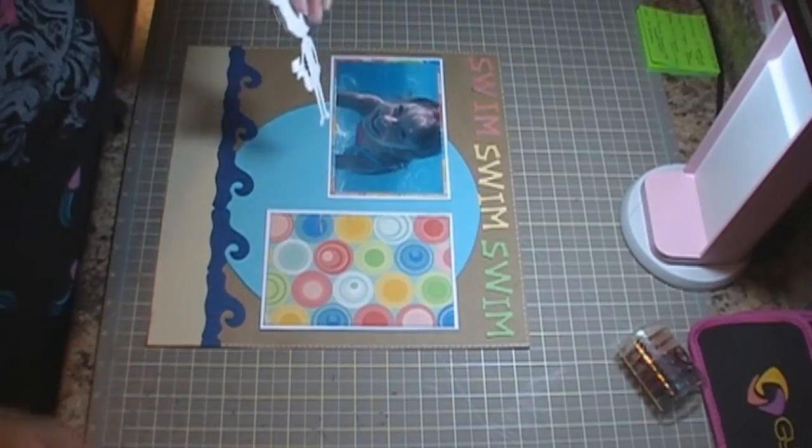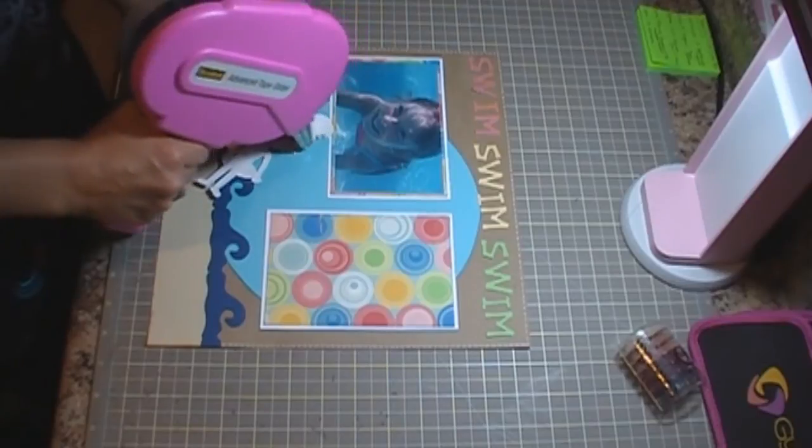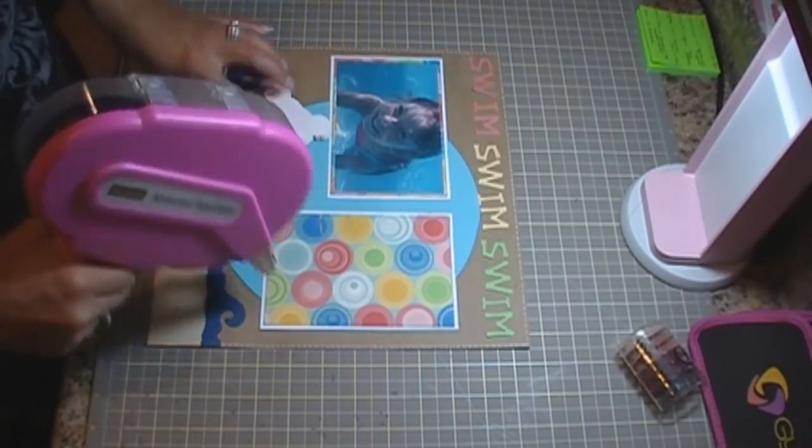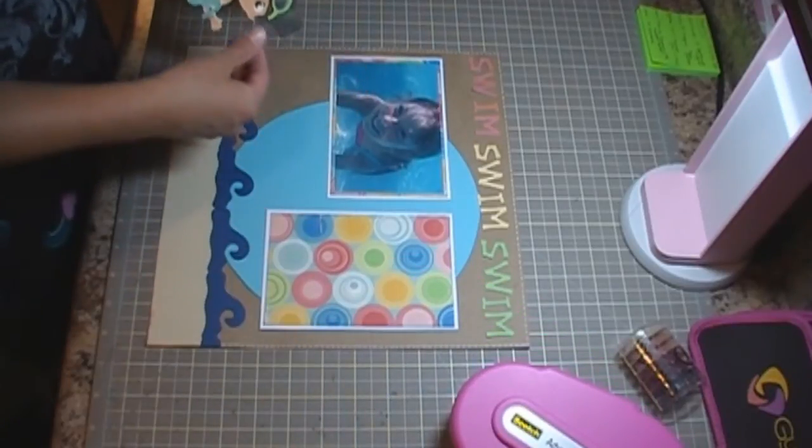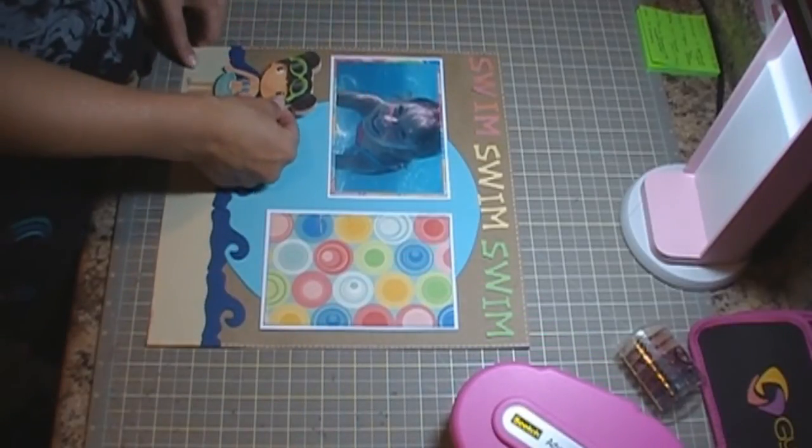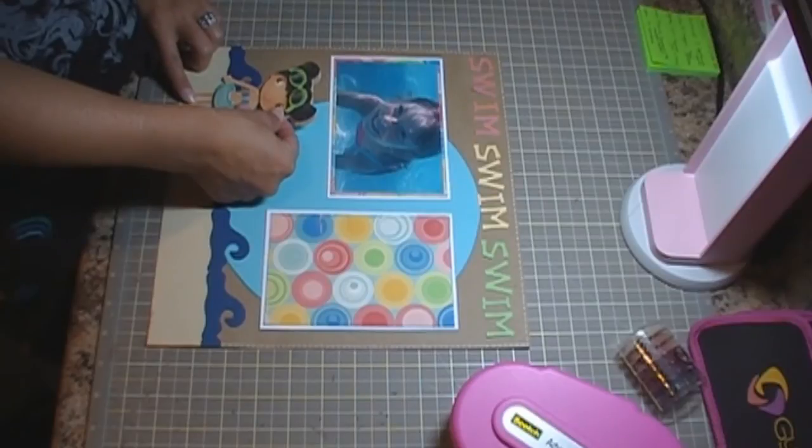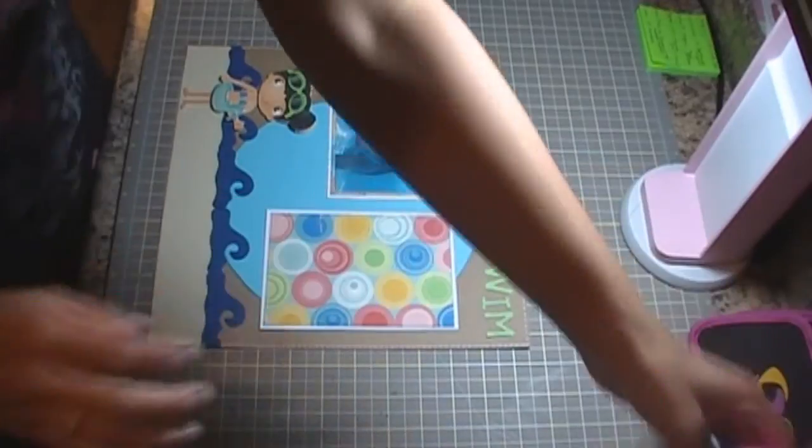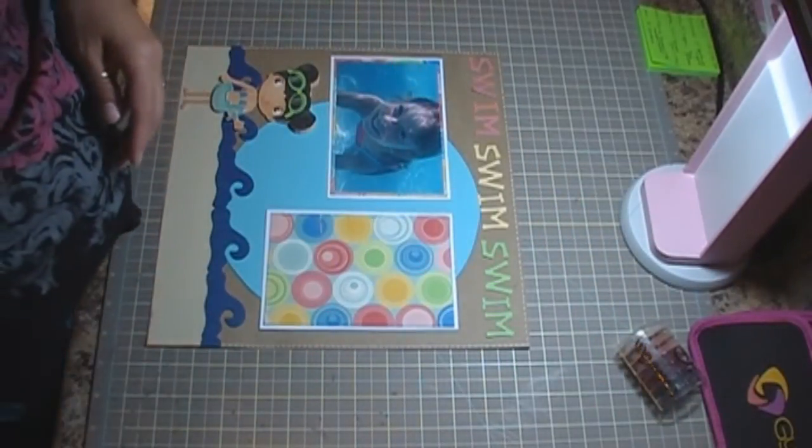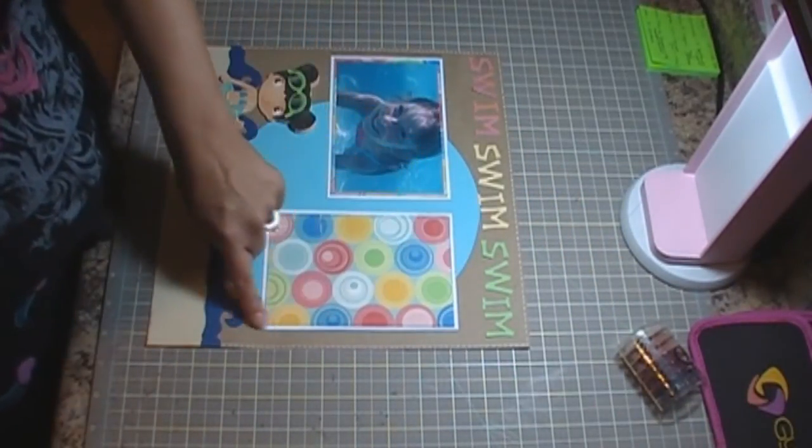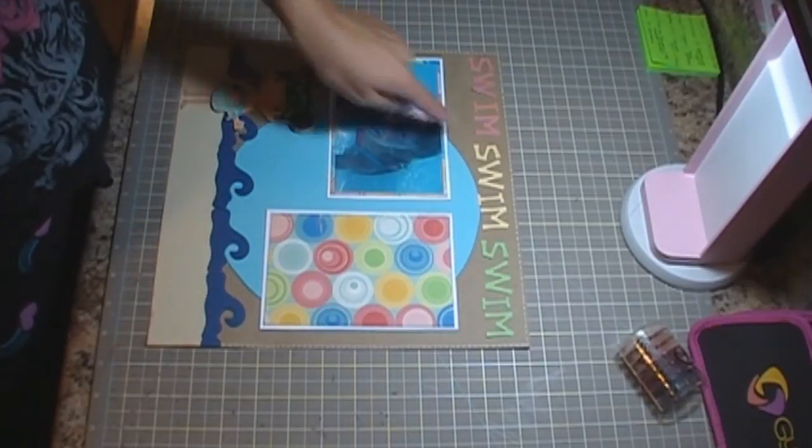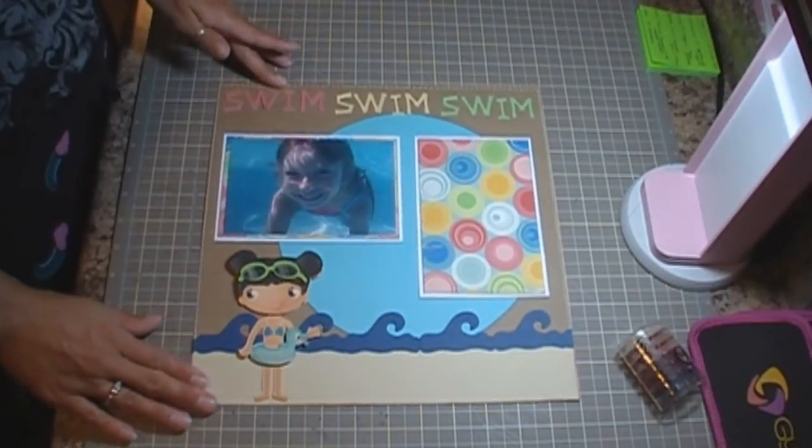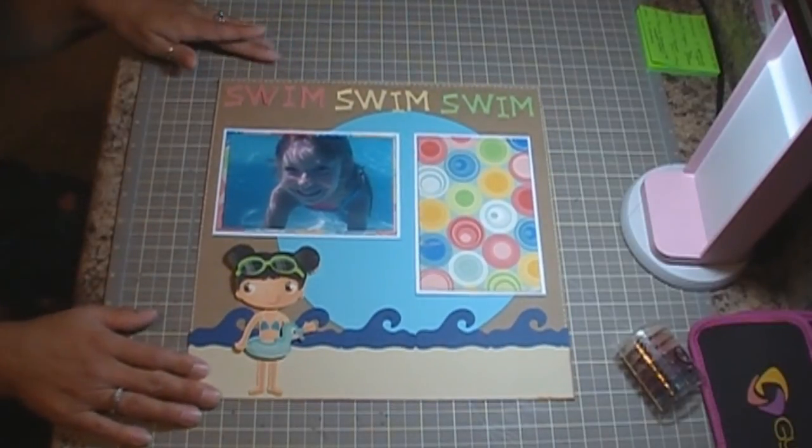So I'm going to go ahead and adhere her as well. And I'm not going to pop dot her up because I've already got her on some foam squares. She's already kind of 3D. So I'm just going to leave her as is. And then what I'm going to do is I'm just going to adhere the title off camera. I'll probably do a little bit more doodling around the circle here. And then that layout will be completed. So I thank you very much for watching and have a great day.